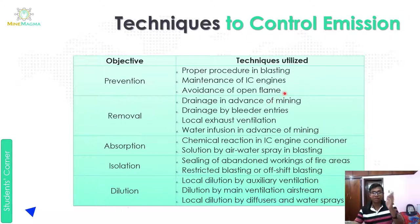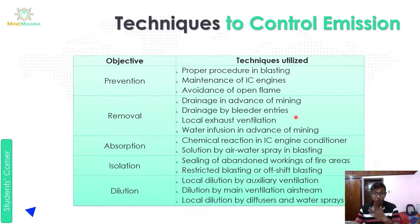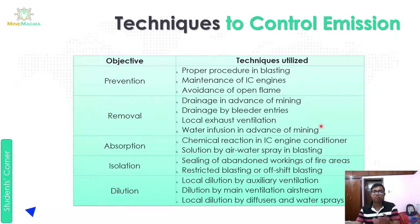Second objective is removal — how to remove gas emissions. First is drainage in advance of mining: whatever gases are to be drained out, that happens in the first step, as we studied in methane drainage. Second is drainage by bleeder entries — the entries on the side used for drainage. Third is local exhaust ventilation, which provides sufficient air underground and removes contaminated or polluted air. Fourth is water infusion in advance of and after mining, so that gases are settled down.